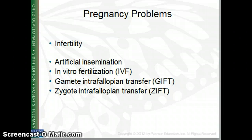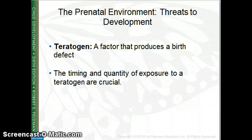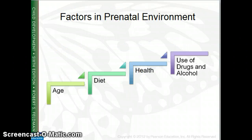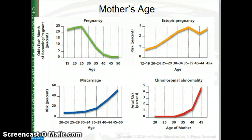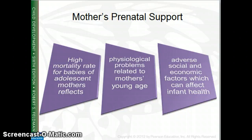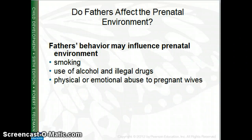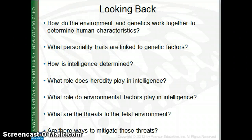In class, we'll discuss different problems that arise in pregnancy, as well as miscarriage and abortion. We'll talk about teratogens — factors in prenatal development that are important — including the mother's age, diet, health, and use of drugs. Prenatal care is a huge issue, as is the father's influence: smoking, drug use, and physical or emotional abuse of the mother can also cause a negative impact. And that is the end of Chapter 3.